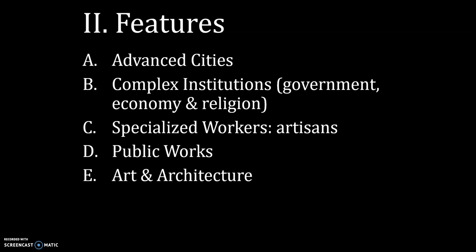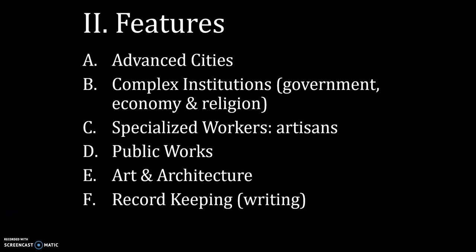Art and architecture — I think that's self-explanatory. Record keeping in the form of writing: once we begin creating surpluses of the food we're growing, we need to keep records of how much we've produced and who we may trade with. And there's the inevitable formation of social classes. So these are just a few of the features of what we call civilization.